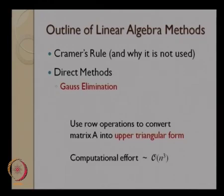Next, we covered the direct methods. The first method that we covered very extensively was the Gauss elimination method. The idea of Gauss elimination is to use row operations to convert the matrix A into an upper triangular form. What we also saw in the previous lecture of this module is that the computational effort required in Gauss elimination is of the order of n cubed.